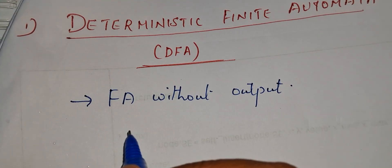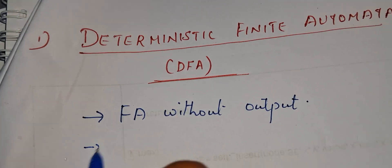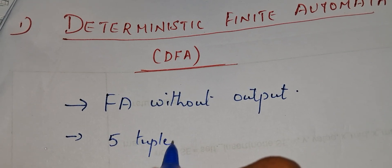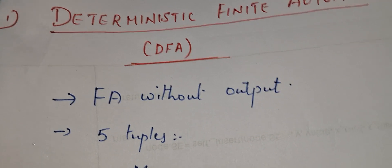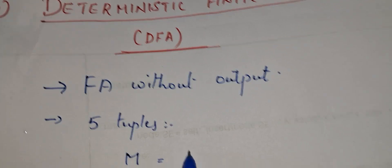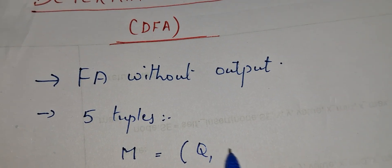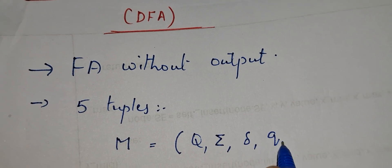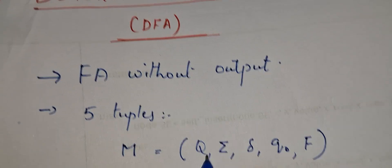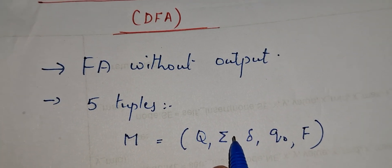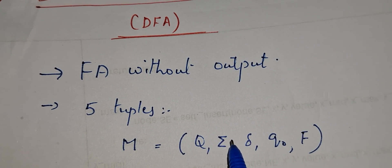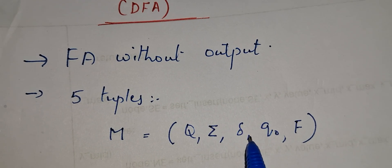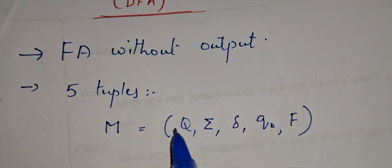DFA is represented by using five tuples. The machine M is equal to five tuples: Q, sigma, del, Q0, and F. So finite automata without output — that is the category DFA belongs to — and DFA is represented by using these five tuples Q, sigma, del, Q0, F.